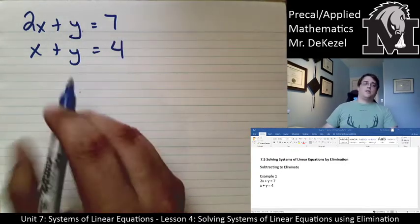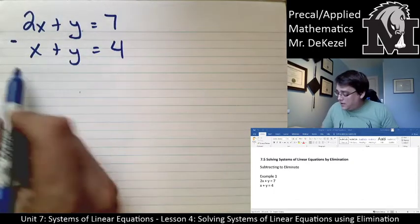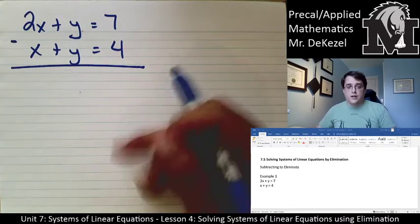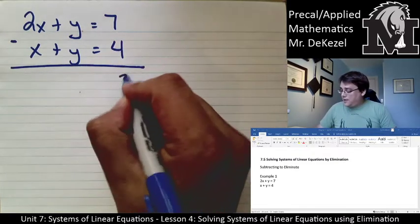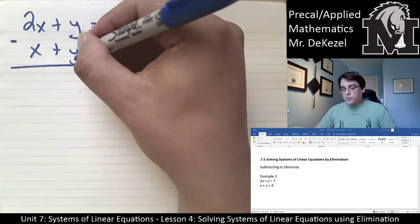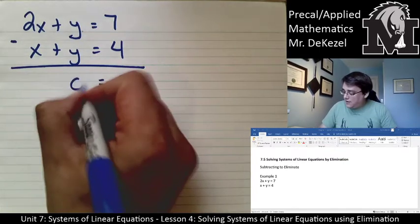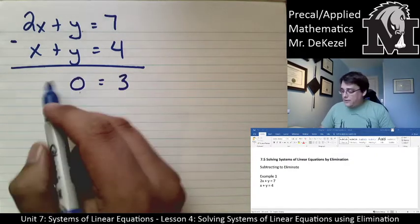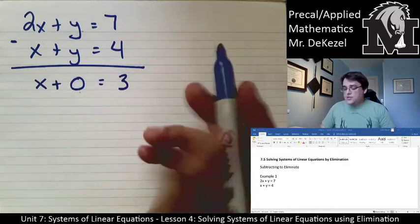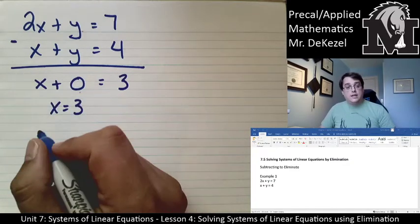We're going to imagine this is a subtraction question where we subtract everything lined up on top of one another. So 7 minus 4 is 3, y minus y is 0, we bring the equal sign down, and 2x minus x is just x. So we're left with x = 3.